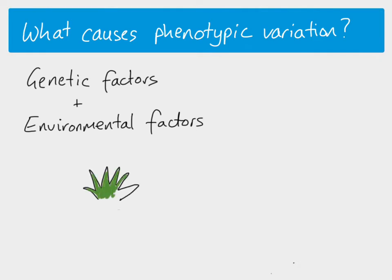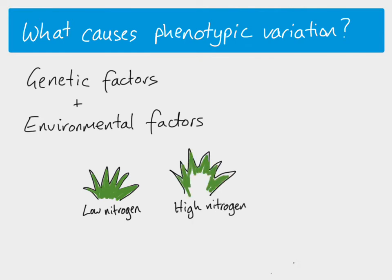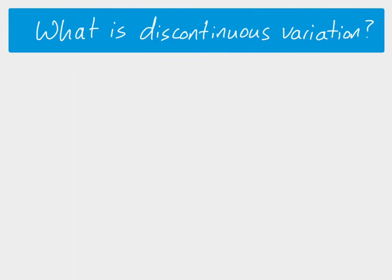We can also see environment playing a part in plant phenotype. A plant grown in a low nitrogen environment may have quite low mass. A genetically identical plant grown in high nitrogen soil has much greater biomass. The only difference is the environment — low nitrogen gives low biomass, high nitrogen gives high biomass. The genes determine the potential growth; the environment determines what actually happens.